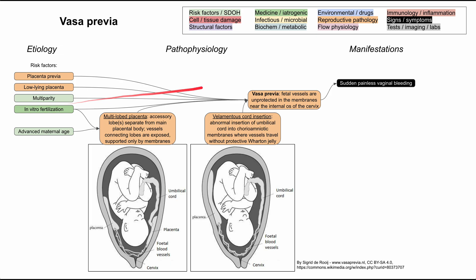Vasa previa most commonly presents with either nothing or with sudden painless vaginal bleeding. This vaginal bleeding usually happens with a rupture of membranes, where there is increased pressure — for instance, the baby's head pushing against the vessels might cause them to bleed. It's worth remembering that this is fetal blood, not the mother's blood.